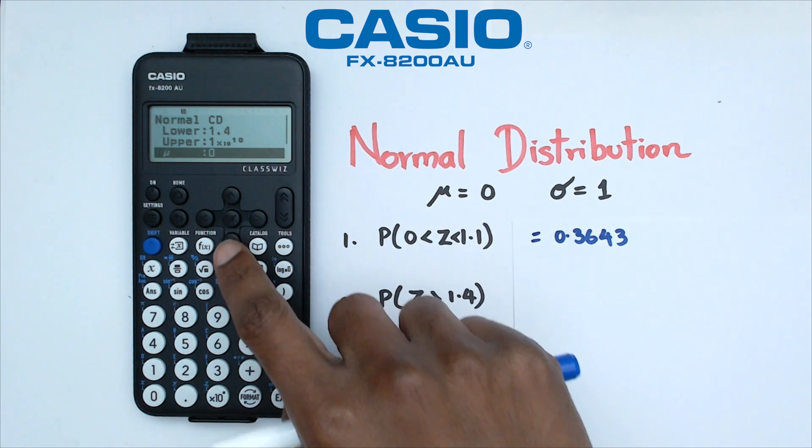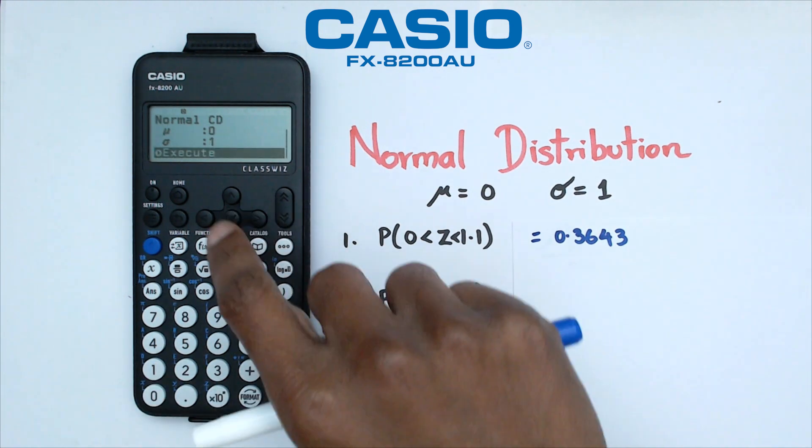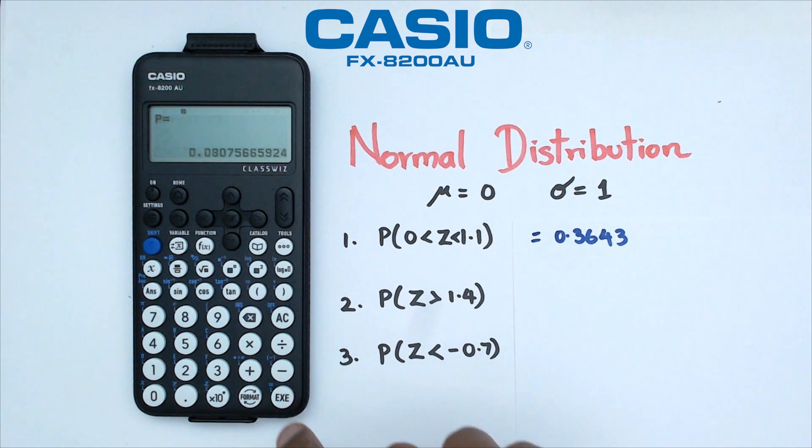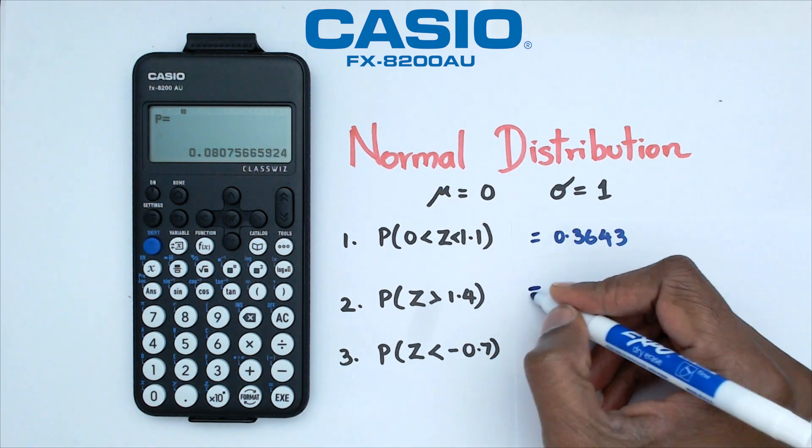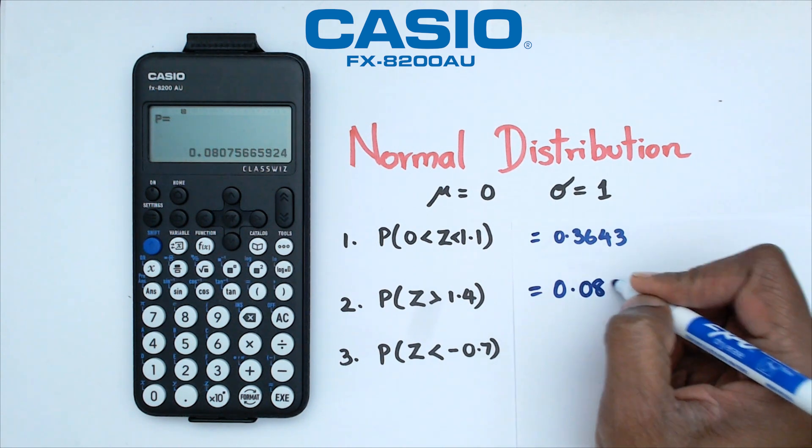And we're going to keep our mean zero and standard deviation 1. So mean is zero, standard deviation is 1. Okay, I guess it doesn't calculate until you go to the execute button there. So we're going to click execute. And we've got a probability of 0.0808.